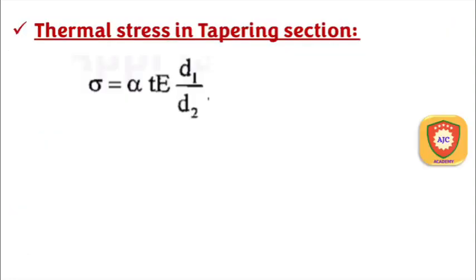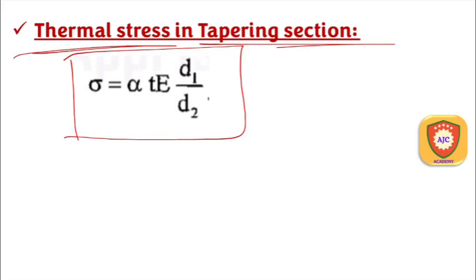For the tapering section, the thermal stress value is sigma = α·T·E·(d1/d2). This covers all the points of the stress and strain topic.